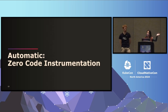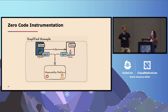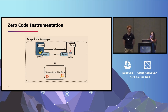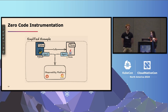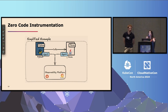Section one is zero-code instrumentation. We have our polyglot application with a Python component and Java components. Both have OTel agents — one for the Java JVM using bytecode instrumentation, and one for the Python interpreter using monkey patching. The agent can manipulate code based on the framework without specifically changing how our application code works.